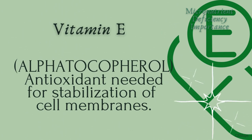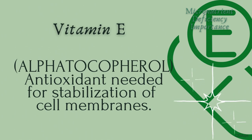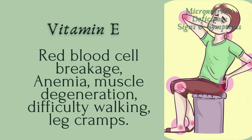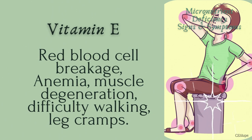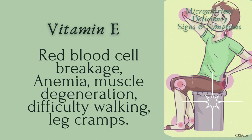Vitamin E is an antioxidant needed for stabilization of cell membranes. Signs and symptoms of Vitamin E deficiency include: red blood cell breakage, anemia, muscle degeneration, difficulty walking, and leg cramps.